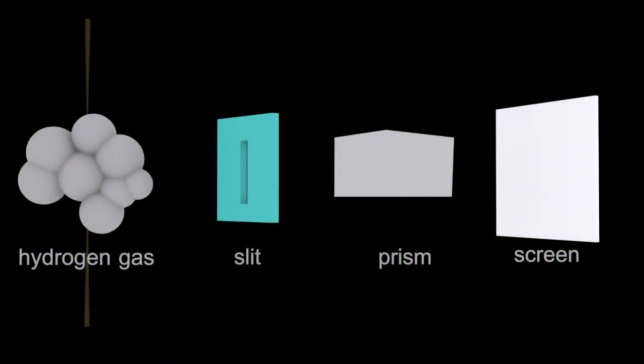So this shows how you could view the line spectrum for hydrogen. First you need to energize the hydrogen gas, perhaps with heat or electricity.